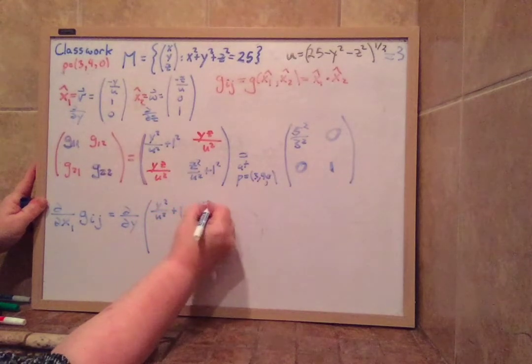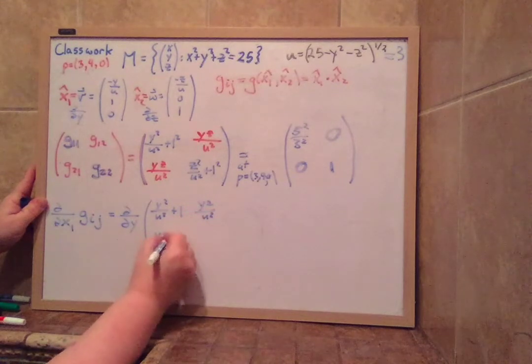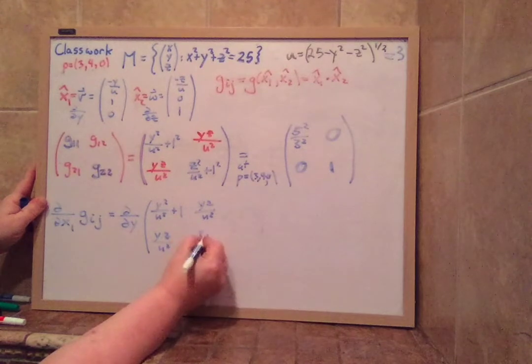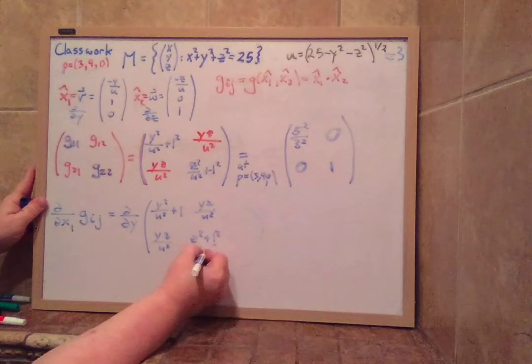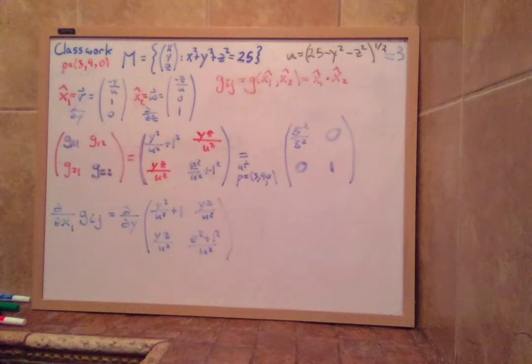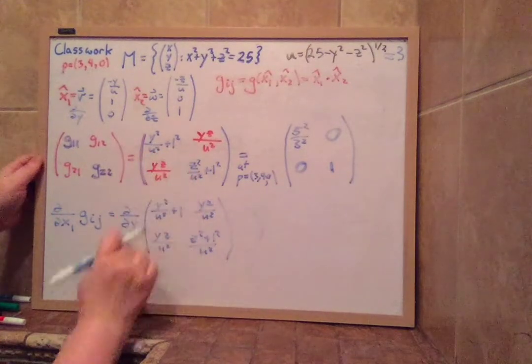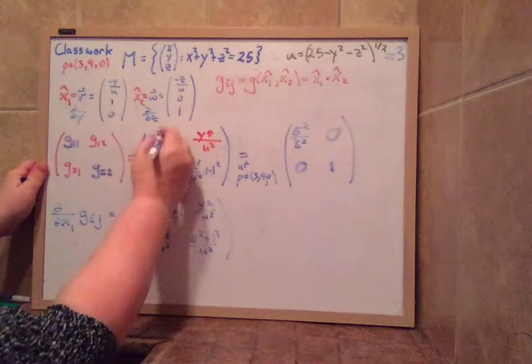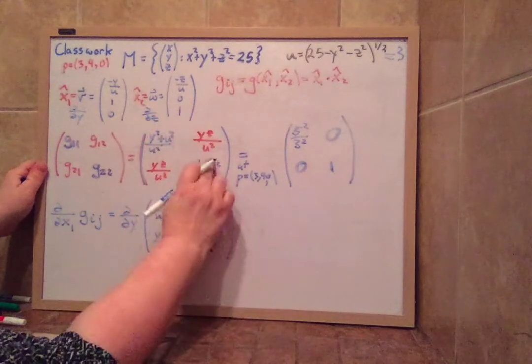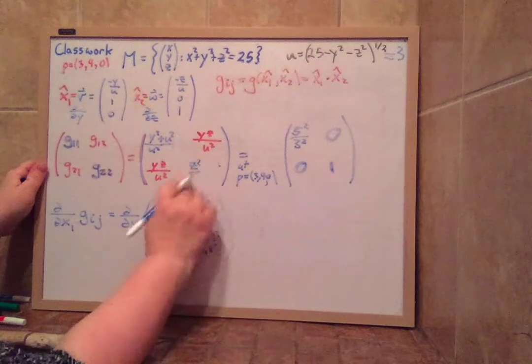Now maybe this could be simplified a little bit. But let's just notice that this is the same as if we took y squared plus u squared over u squared. And this would be z squared plus u squared over u squared. Just making common denominators there.